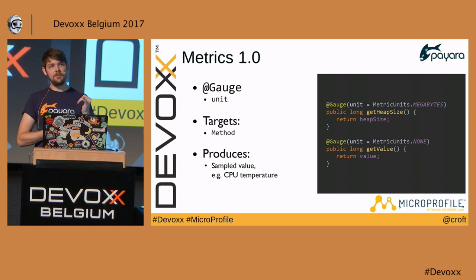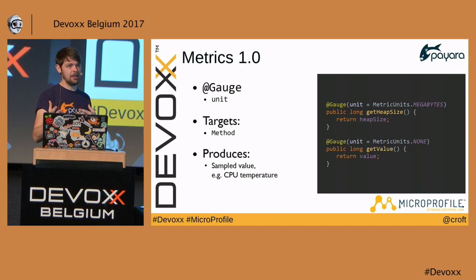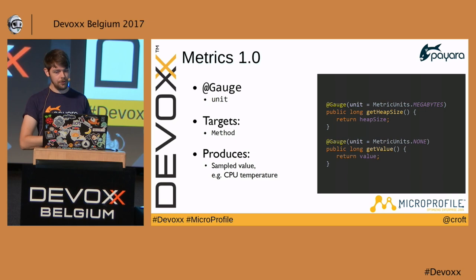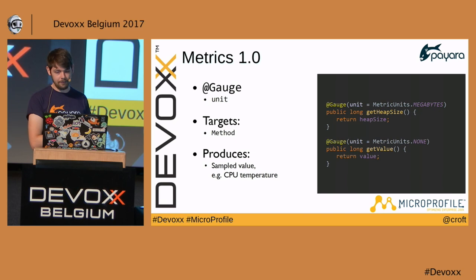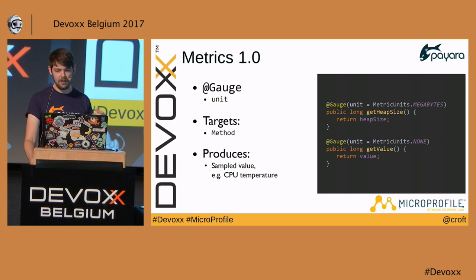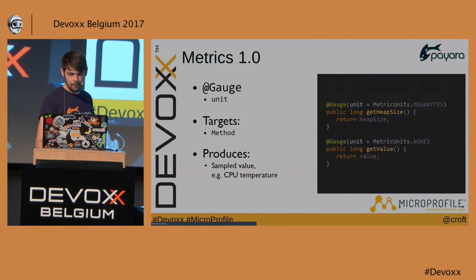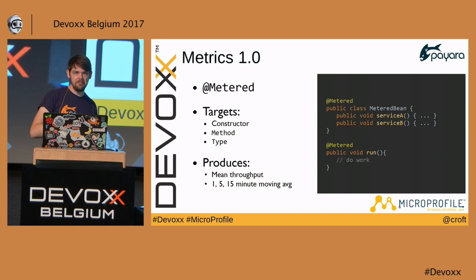@Gauge requires you to set a unit. Units are encouraged for all metrics but mandatory for @Gauge, because having that metadata about what you're measuring adds a lot of value. There's a MetricUnits enum — if your value doesn't make sense to measure in megabytes, days, or seconds, you can use MetricUnits.NONE.